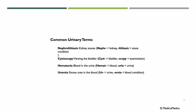Some common urinary terms: nephrolithiasis means kidney stones — 'lithi­asis' comes from stone or a stone condition, 'nephr' is kidney. Cystoscopy means viewing the bladder — 'cyst' is bladder, '-scopy' means visual examination. Hematuria — 'hema' means blood, '-uria' means urine, so blood in the urine. Uremia means excess urea in the blood.